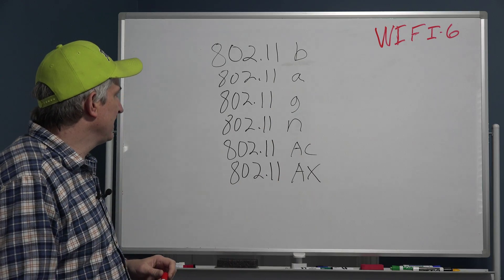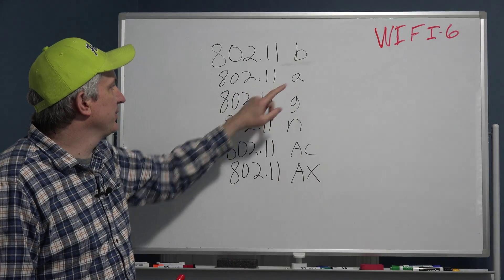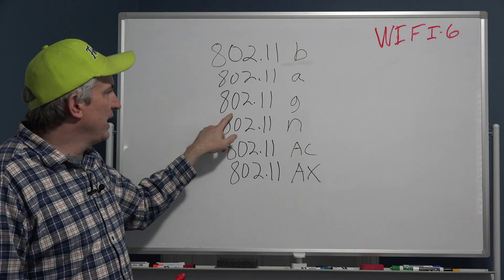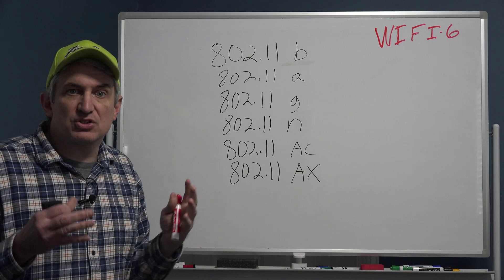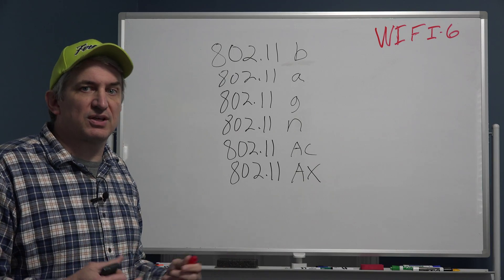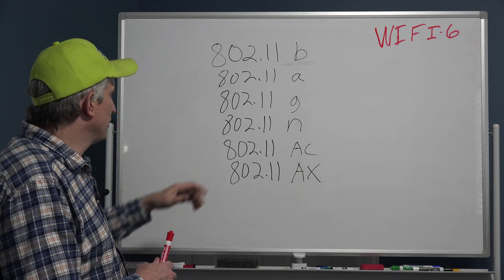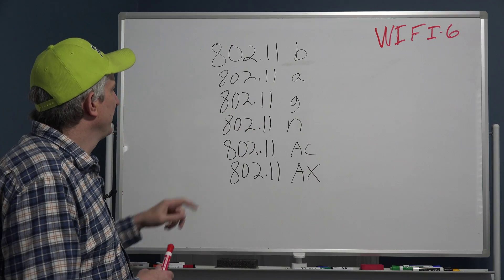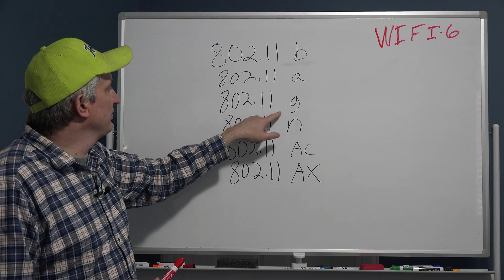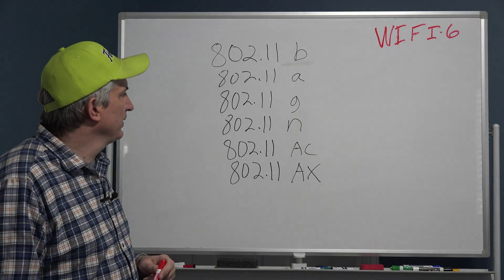And by the way, 802.11 refers to a document that describes how all these things are supposed to work. That's what 802.11 is, a standard. So 802.11g came after a, and then after that became 802.11n. Some people called it wireless n.